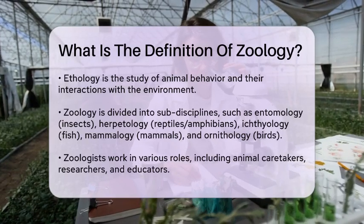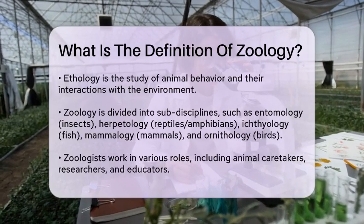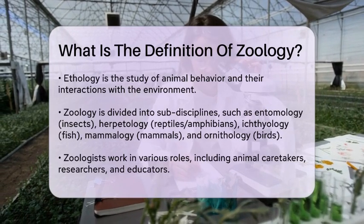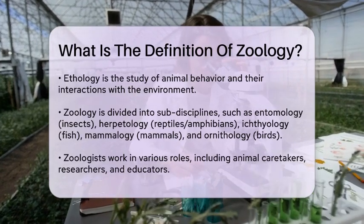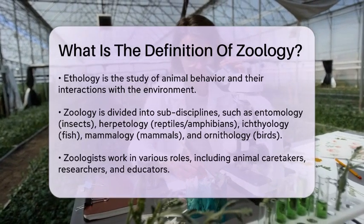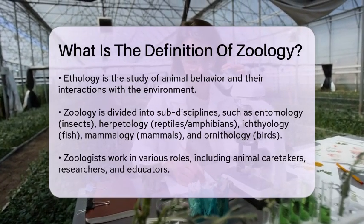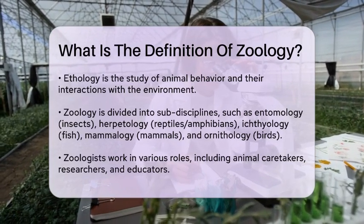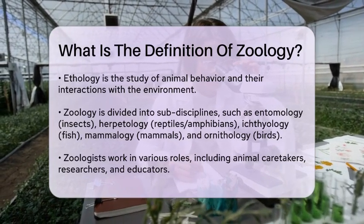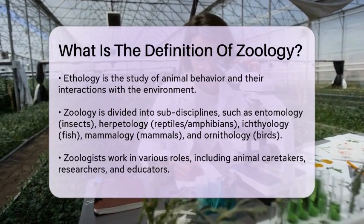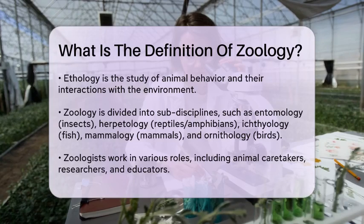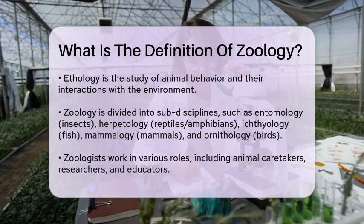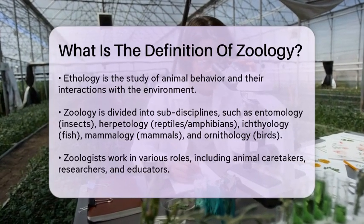The field is divided into various sub-disciplines, each focusing on specific types of animals. For example, entomology is the study of insects, herpetology is the study of reptiles and amphibians, ichthyology is the study of fish, mammology is the study of mammals, and ornithology is the study of birds.